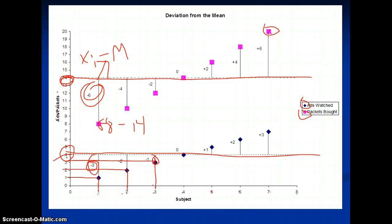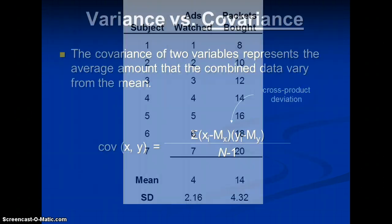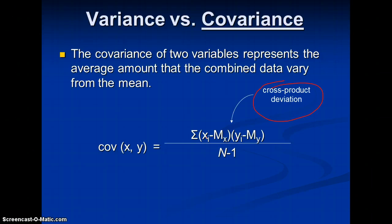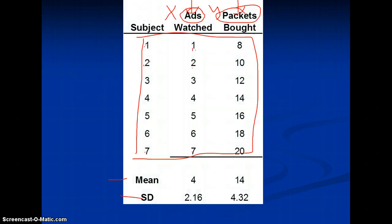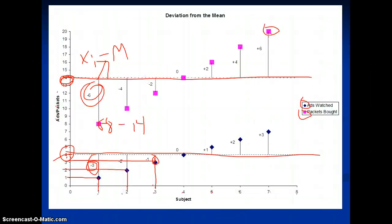We're back looking at how to measure relationships using correlation. The previous screencast was cut off at 15 minutes, but we were right at the point where we were measuring the covariance — specifically the cross product deviation — using a set of imaginary data, and we were visualizing deviation from the mean.